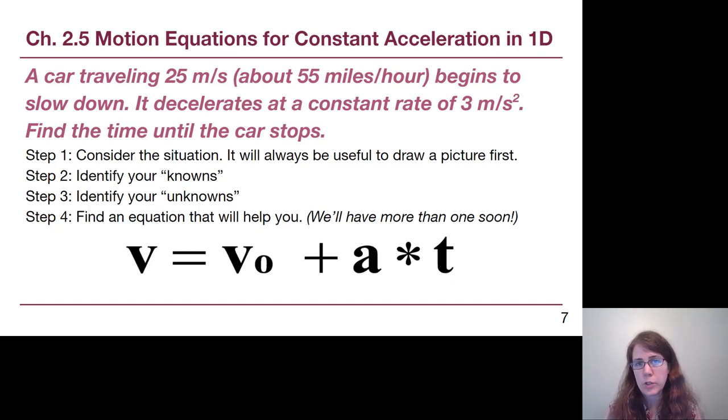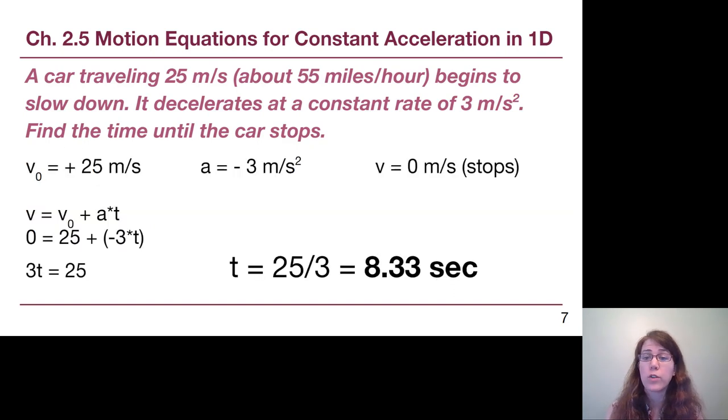Now the very first thing we learn about this car is that it's moving at 25 meters per second. That is our starting velocity, our initial velocity. The fact that we're told that it slows down means that the number value of 3 meters per second squared must be negative. That will come from drawing a picture and recognizing that the velocity arrow and the acceleration arrow point in opposite directions. Opposite directions means opposite signs. That is going to be true for the entire semester, and if you get that mantra into your head early, it's really going to help save you from making common mistakes.